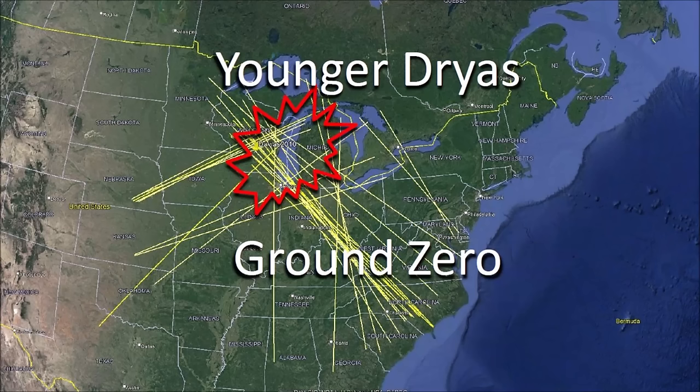The Carolina Bays and the Nebraska Rainwater Basins are elliptical features oriented toward the Great Lakes. Their convergence point is a clue about the location of an extraterrestrial impact on the Laurentide Ice Sheet that launched pieces of glacier ice in ballistic trajectories. The secondary impacts of the ice boulders created inclined conical cavities that became shallow elliptical bays by viscous relaxation. In this presentation, I will review some publications that have examined the headings of the Carolina Bays to determine the location of the extraterrestrial impact.